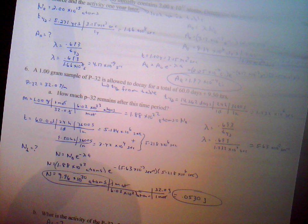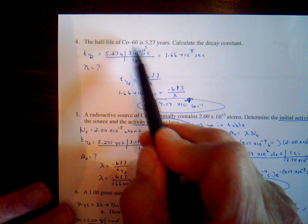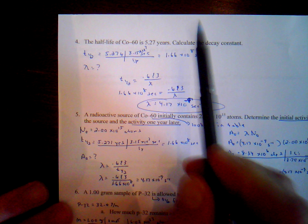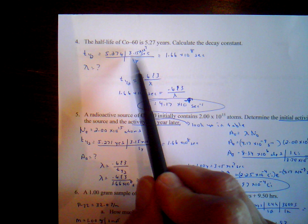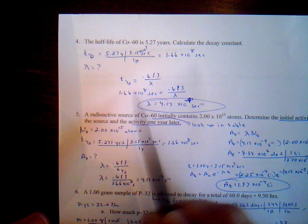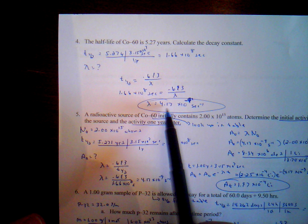Number 4: the half-life of cobalt-60 is 5.27 years. Calculate the decay constant. Converting to seconds using 3.15 times 10 to the 7 seconds per year, we get 1.66 times 10 to the 8 seconds. Solving for the decay constant using the half-life equation gives 4.17 times 10 to the minus 9 per second.